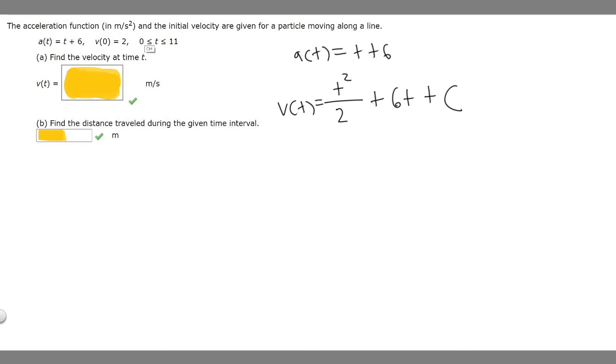They give us what v sub 0 is, so that's going to allow us to replace our c with an actual value. So v sub 0, which is 2, is equal to 0 squared over 2, which is just 0, plus 6 times 0, which is 0, plus c. So that means c is going to be equal to 2.